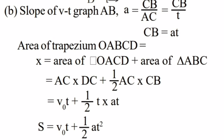Answer: Slope of VT graph AB: A is equal to CB by AC equals CB by T. CB is equal to AT. Area of trapezium OABCD equal X is equal to area of OACD plus area of triangle ABC equal AC into DC plus half AC into CB. S is equal to V₀T plus half AT square.